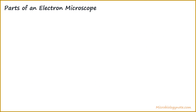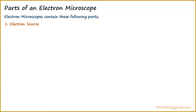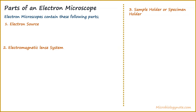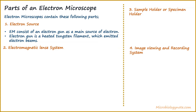Now we will talk about the different parts of an electron microscope. Electron microscopes contain the following parts: an electron source, an electromagnetic lens system, a sample holder or specimen holder, and an image viewing and recording system. The first part is the electron source. Electron microscopes consist of an electron gun as the main source of electrons. The electron gun is a heated tungsten filament which emits electron beams.